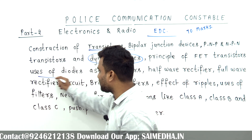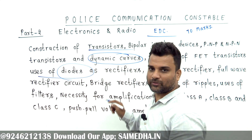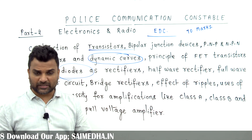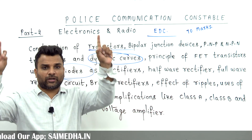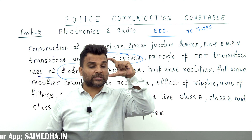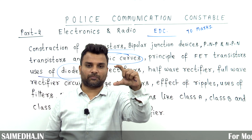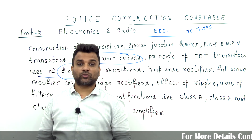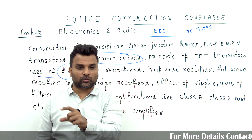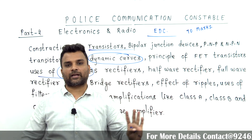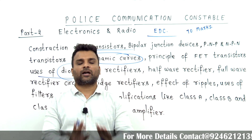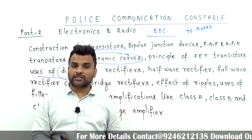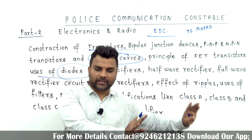Next are diodes — uses of diodes and rectifiers: half-wave rectifier, full-wave rectifier, and bridge rectifier. We can use a regulated power supply. The stages are: transformer, then rectifier, then filter, then regulator. No rectifier converts AC to pure DC.